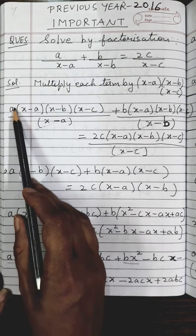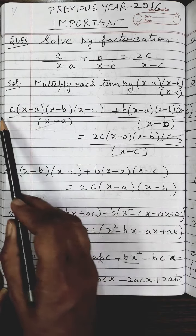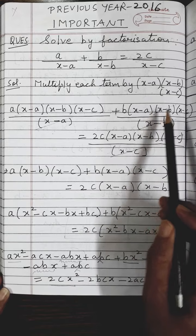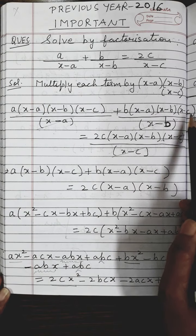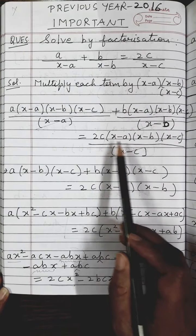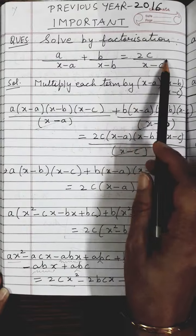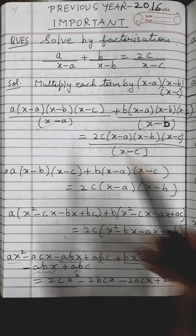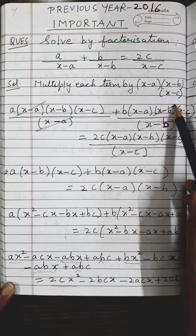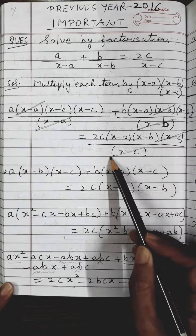Picking up the first term: a multiplied by x minus a, into x minus b, into x minus c, divided by x minus a. Plus b multiplied by x minus a, into x minus b, into x minus c, upon x minus b. On the right side, 2c multiplied by x minus a, into x minus b, into x minus c, upon x minus c. Now x minus a cancels with x minus a; in the second term x minus b cancels; and on the right side x minus c cancels.